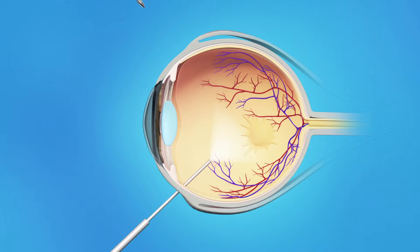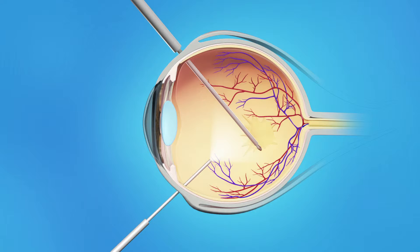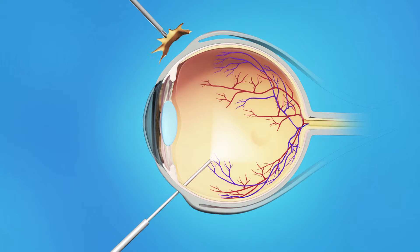Your ophthalmologist will repair your macular pucker with vitrectomy surgery. This procedure is done in an operating room. To perform a vitrectomy, your ophthalmologist makes tiny incisions in the sclera, or white of the eye. Using microsurgery instruments, your eye surgeon removes the wrinkled tissue on your macula, as well as the vitreous gel that may be pulling on the macula.